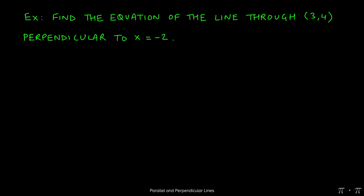Let's say we're asked to find the equation of a line that passes through 3, 4, but is perpendicular to x equals negative 2.